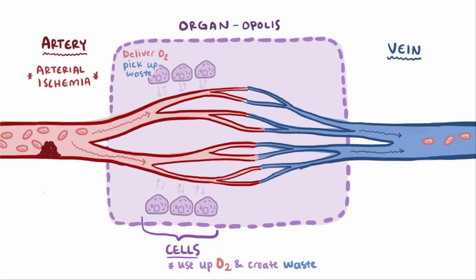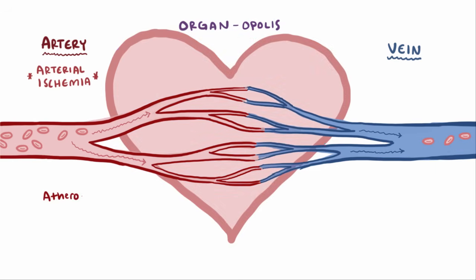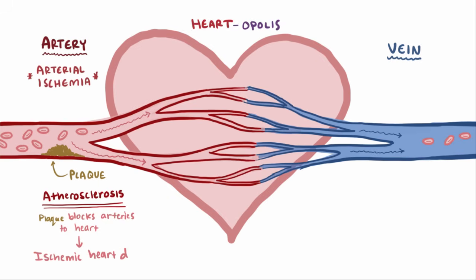A super important and well-known example of arterial ischemia is atherosclerosis, where plaque builds up in the arteries going to your heart tissue, which blocks arterial flow, reduces the amount of blood and oxygen reaching your heart tissue, and causes ischemic heart disease.